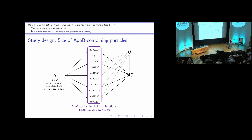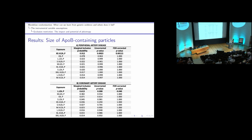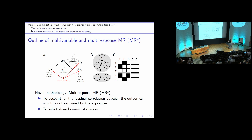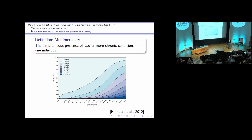We dug deeper by looking at the size of apolipoprotein B-containing particles using an NMR metabolite platform, finding different sizes coming up for PAD and coronary artery disease, which could explain why we develop disease in different parts of the body. This motivated the multivariable multi-response MR model, which accounts for residual correlation between outcomes not explained by exposure, allowing us to put many outcomes into the model simultaneously and select shared causes of disease — motivated by multimorbidity, the simultaneous presence of two or more chronic health conditions.